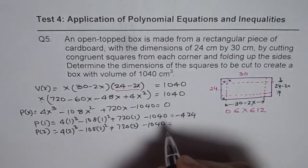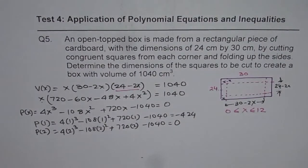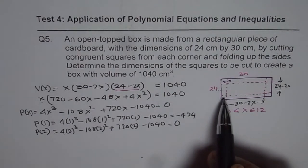So, we get 4 times 2 cube minus 1040 equals to, we get 0 this time. So, that means 2 is a factor, right? So, we know at least one dimension, which is 2 by 2.